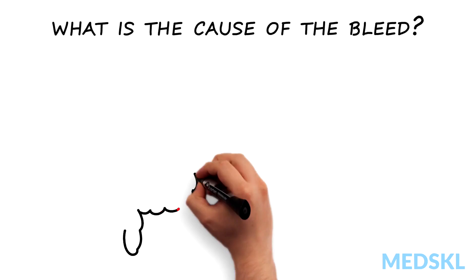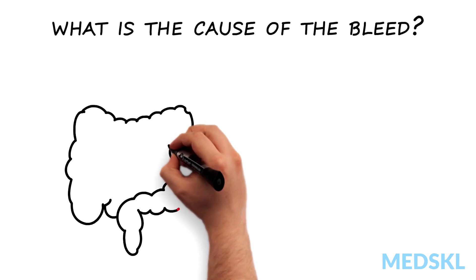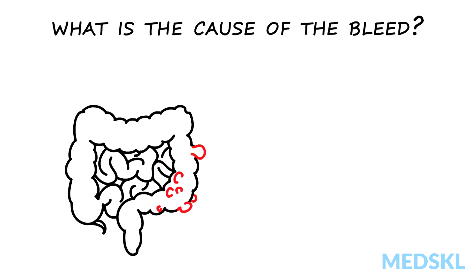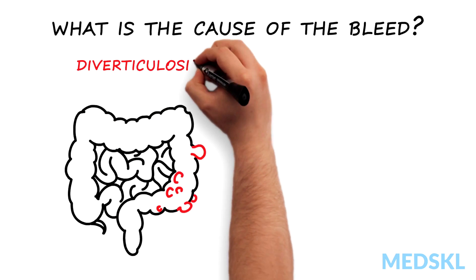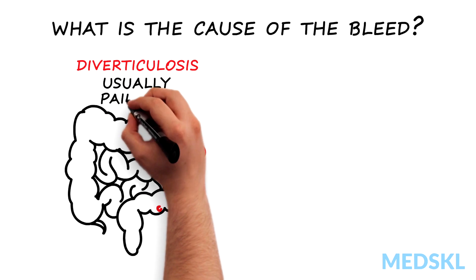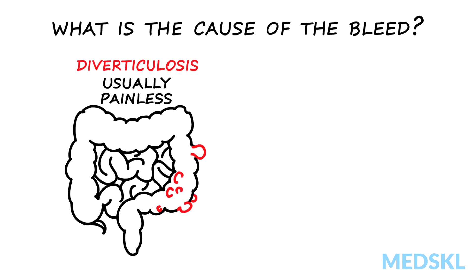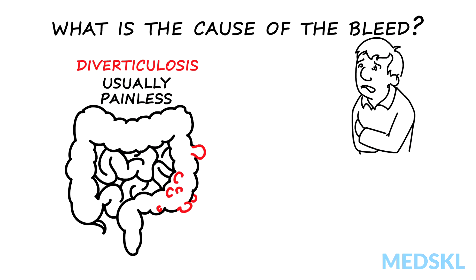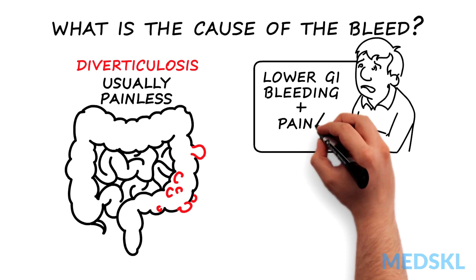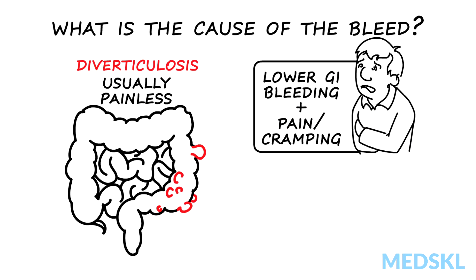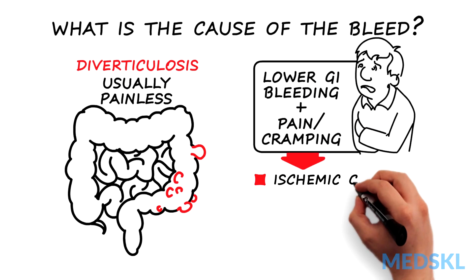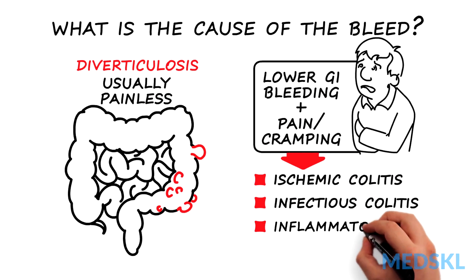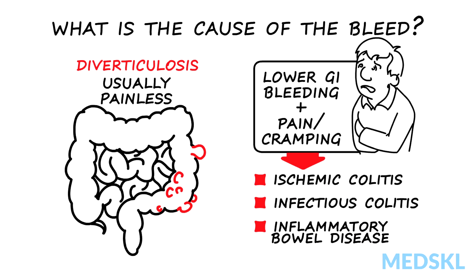Up to half of cases of lower GI bleeding are caused by diverticulosis, which is usually painless. Causes of lower GI bleeding associated with pain and cramping include ischemic colitis, infectious colitis, and inflammatory bowel disease.